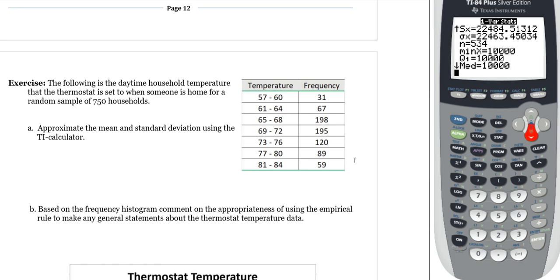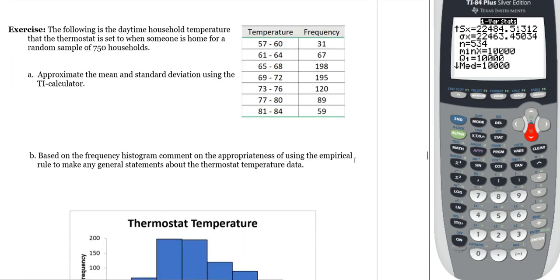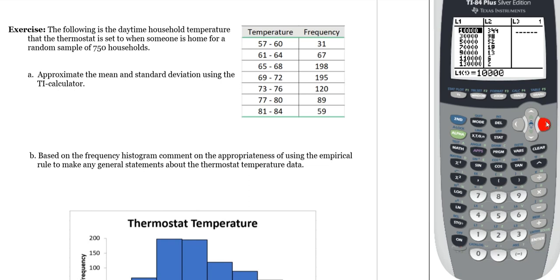Okay, this first exercise on top of page 13 here. Again, I already have the frequencies in L4. I recommend having those there already. The following is the daytime household temperature that the thermostat is set to when someone is home for a random sample of 750 households. Again, sample, so that dictates how we identify summary statistics. Approximate the mean and standard deviation using the ATI calculator. So, we're doing a sample. We are going to find X bar and we're going to find S.